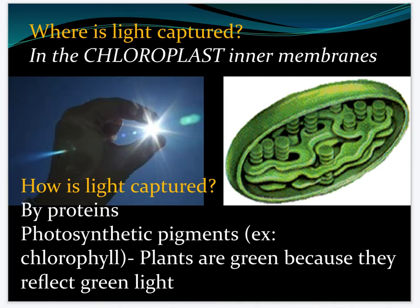So where is light captured? Light is captured in the chloroplast, and it's done by proteins which are photosynthetic pigments like chlorophyll. It's really important to note that chlorophyll is the reason plants are green. Chlorophyll is the primary photosynthetic pigment in plants. Chlorophyll is a protein molecule, and plants use all the wavelengths of light that hit them — except for green.